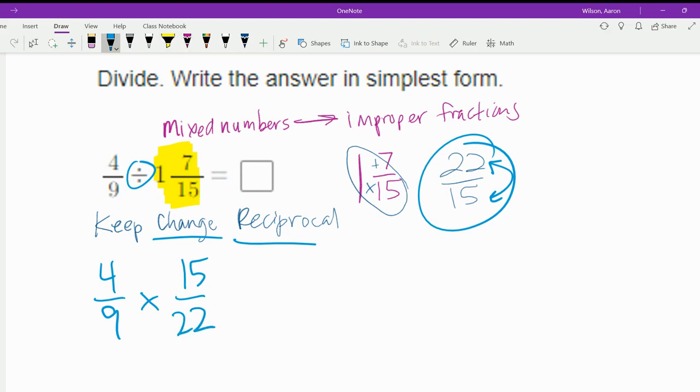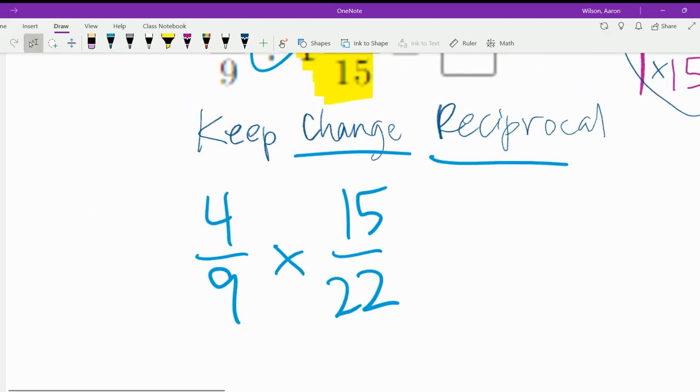And now we are supposed to multiply. And when you're multiplying, you can actually just multiply straight across.